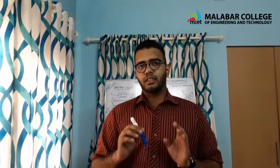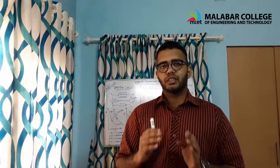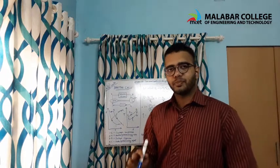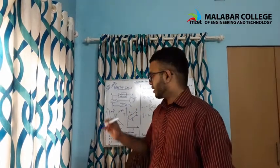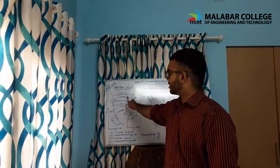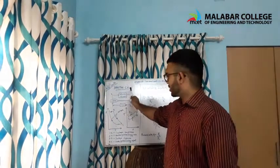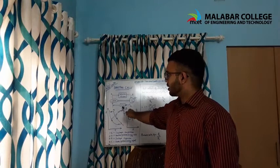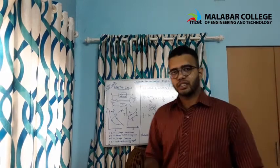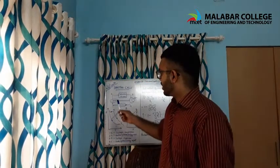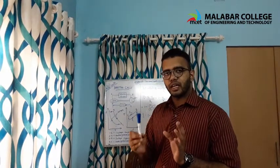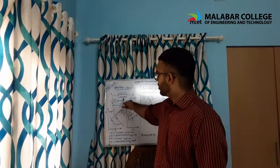The Brayton cycle is a constant pressure variation cycle. The arrangement of a Brayton cycle consists of a compressor, followed by a combustion chamber, then a turbine, and then a cooler — and the cycle repeats by itself.